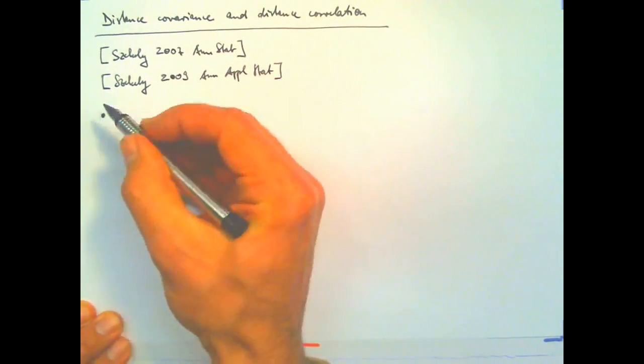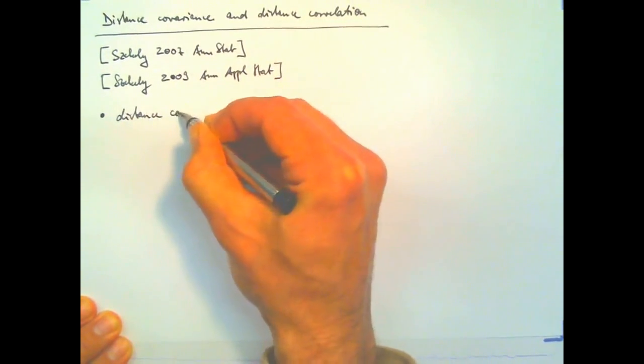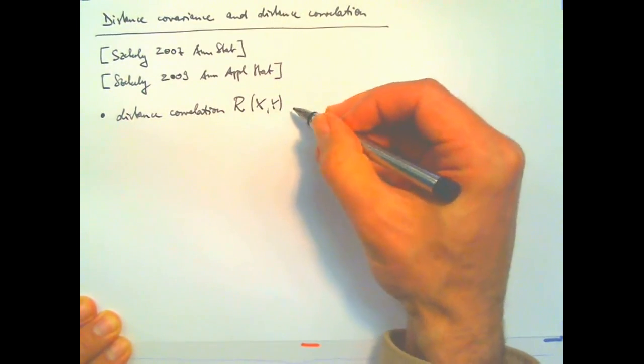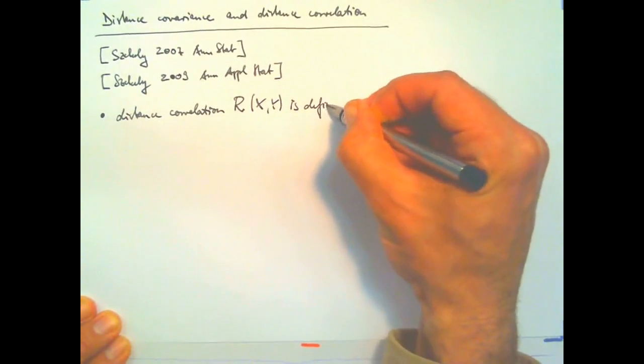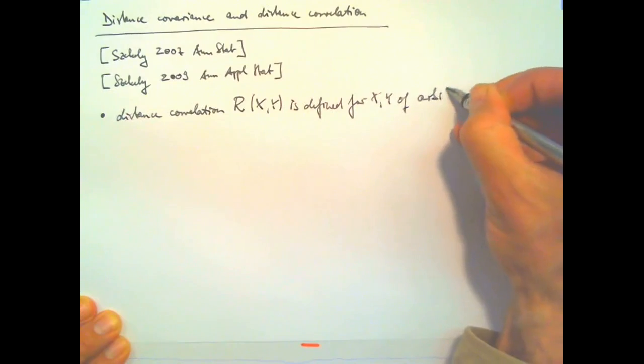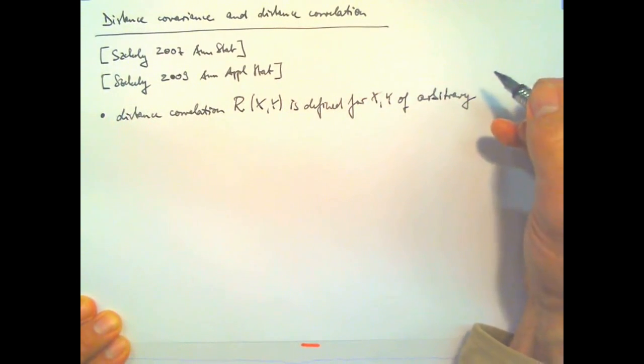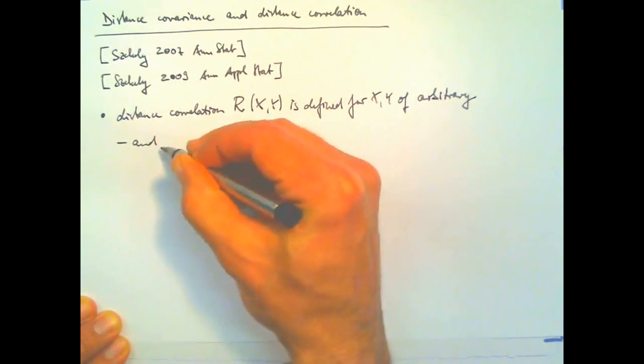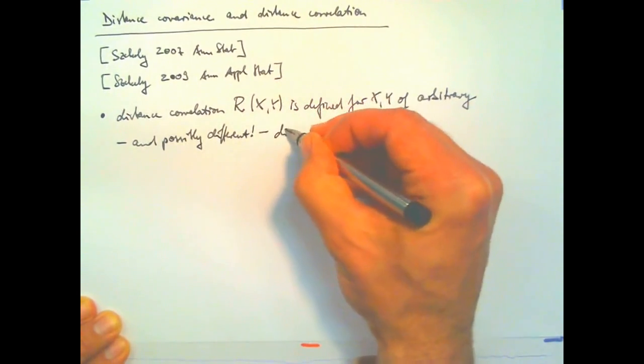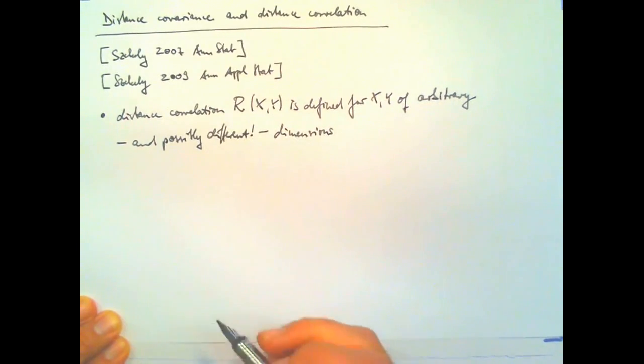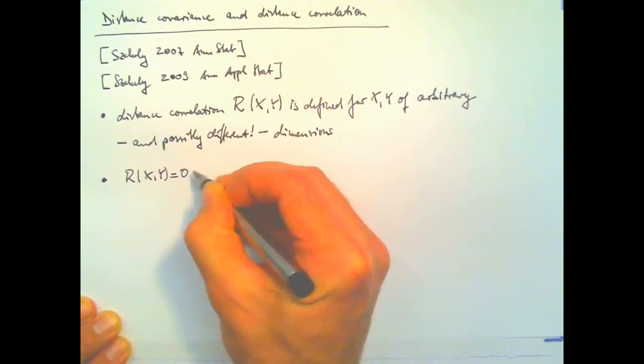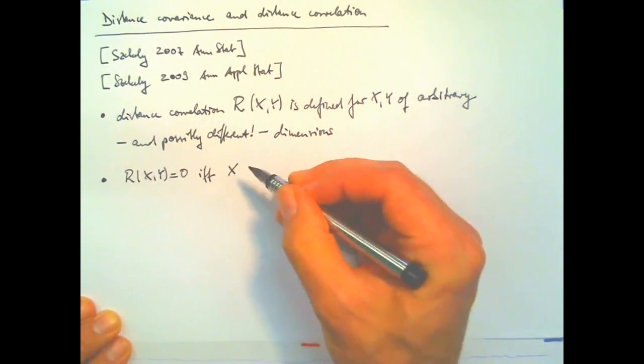So interesting properties are that the distance correlation, which he calls R, of two random variables X and Y, is defined for X and Y of arbitrary and even different or possibly different dimensions.